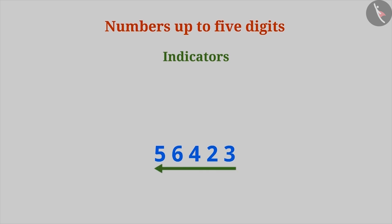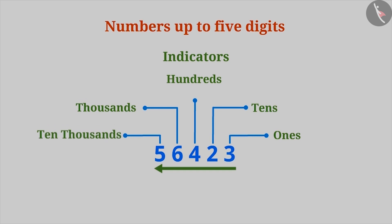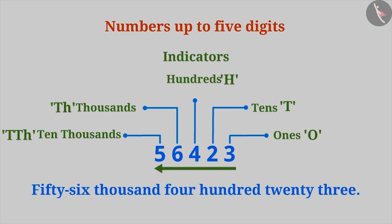The indicator is expressed from right to left. Some indicators are ones, tens, hundreds, thousands, ten thousands, which are represented by the capital letters O, T, H, TH and TTH respectively. This number is expressed in words as 56,423.